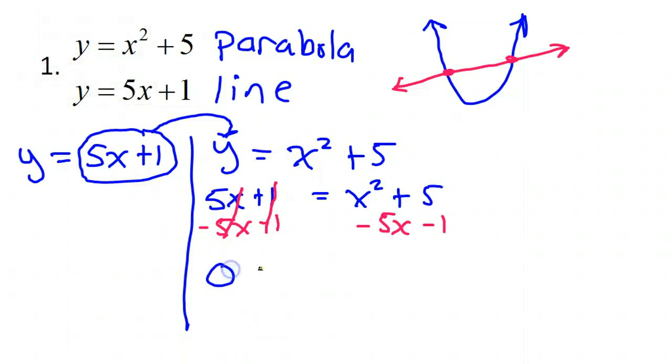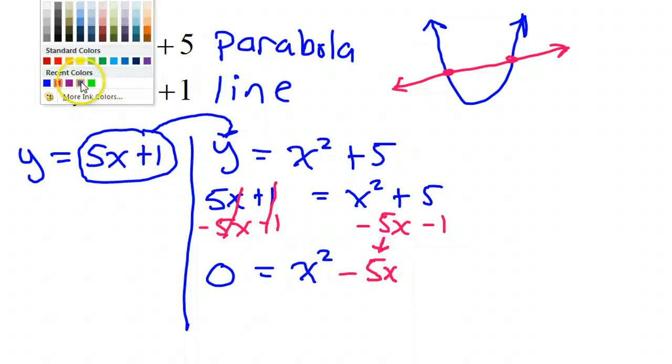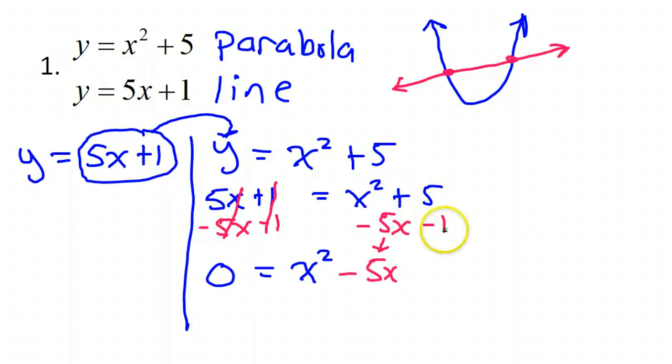So that's going to give me zero over here. And then I'm going to have x squared. Alright, just brought that down. The negative 5x doesn't have anything to combine with. So I'm just going to bring down the negative 5x. Now, the positive 5 and the negative 1, I'm going to combine those. And that's going to give me positive 4. So I just want to be clear where each of these terms is coming from.